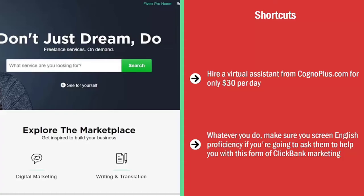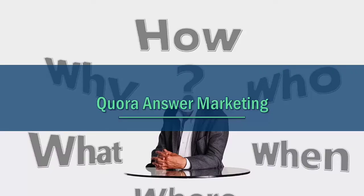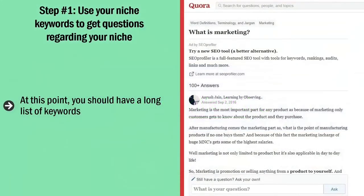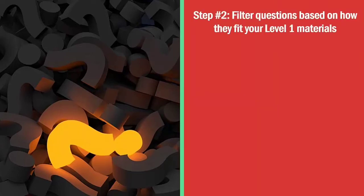Quora answer marketing: what follows is a step-by-step guide to marketing on Quora. If you need a refresher on what Quora is and how it works, check video three. Step number one: use your niche keywords to get questions regarding your niche. At this point you should have a long list of keywords directly related to the products you've selected. Enter these keywords into Quora's search box and you should be able to retrieve at least some questions related to your niche.